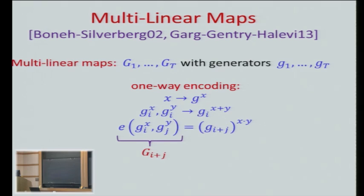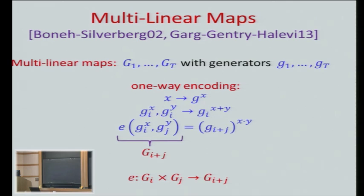Think of it as almost like encryption — fully homomorphic encryption — where you can add and multiply inside the encryption. The key difference is that at the end you should also be able to test whether you got a certain element. In this case, you can test whether you've got an encoding of zero or not. With just encryption, if you don't have the secret key, you get garbage and can't test anything. T is only polynomial — so the number of multiplications you can do is polynomial.